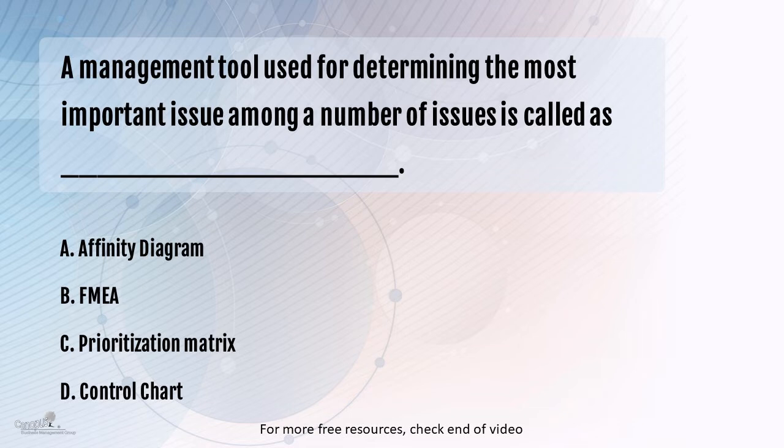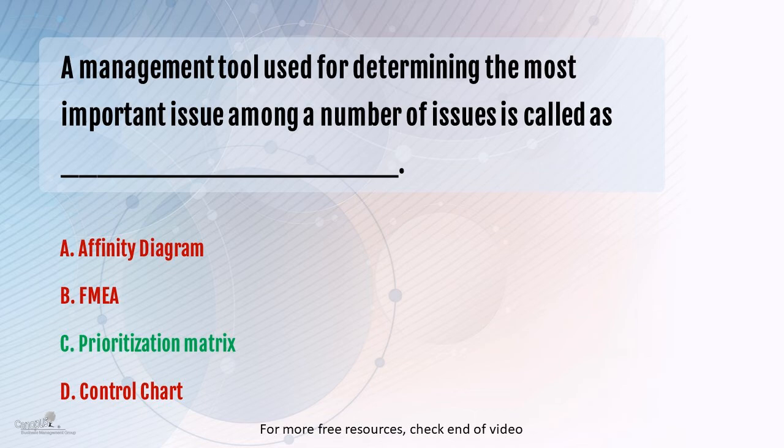Prioritization Matrix — the answer dovetails very well into this question, because we're trying to identify the most important issue. In a prioritization matrix, we draw an association between the problem we have on hand and various causes. We give importance to various causes and then prioritize them as to which one occurs more often. We can easily identify which one we have to act upon. So the answer is C.